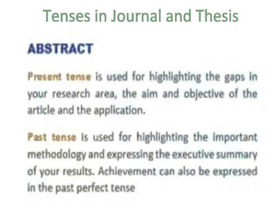Abstract. Present tense is used for highlighting the gaps in your area, the aim and objective of the article, and the application. Past tense is used for highlighting the important methodology and expressing the executive summary of your results. Achievements can also be expressed in the past perfect tense.